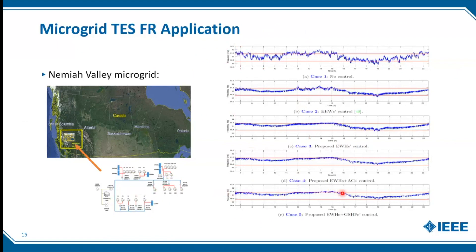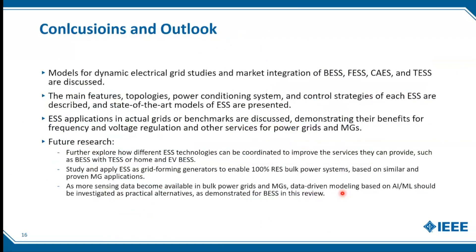To conclude, this work focused on electrical grid studies and market integration of four types of energy storage systems: batteries, flywheels, compressed air energy storage, and thermal energy storage. We looked at the main features, topologies, power conditioning, and control strategies each system can provide. State-of-the-art models were presented and applications to actual grids and benchmark systems demonstrated the benefits of frequency and voltage regulation and other services these systems can provide to power grids and microgrids.